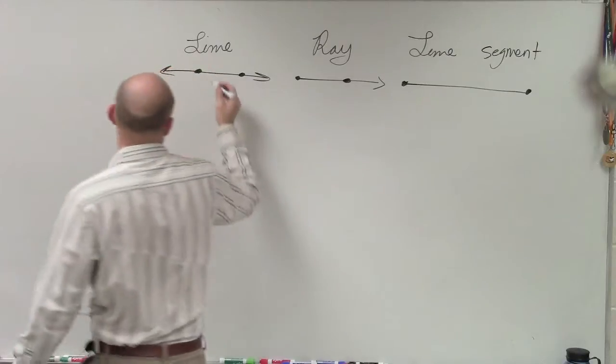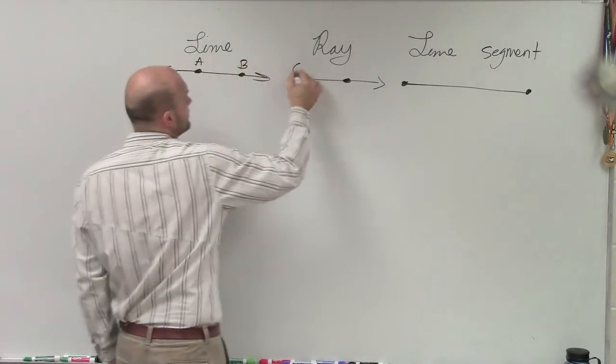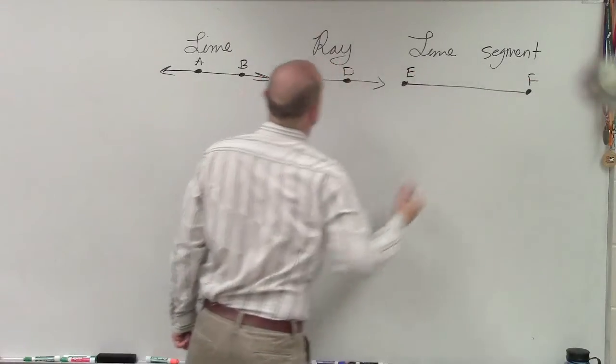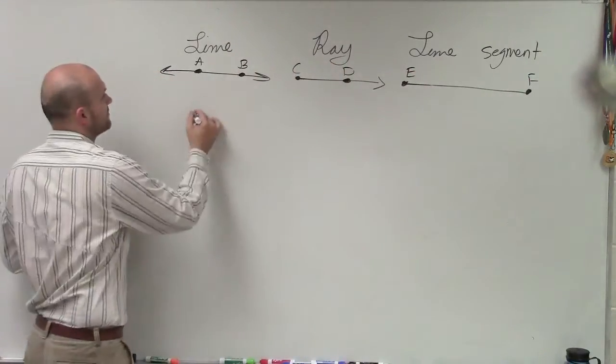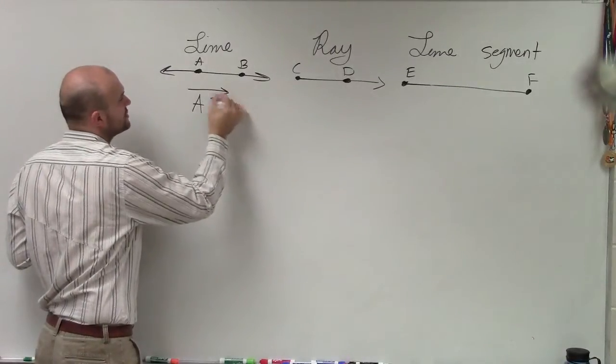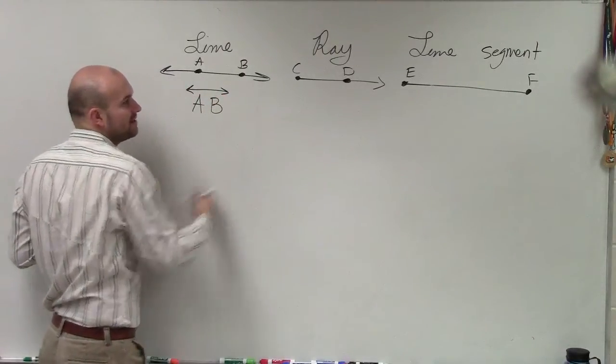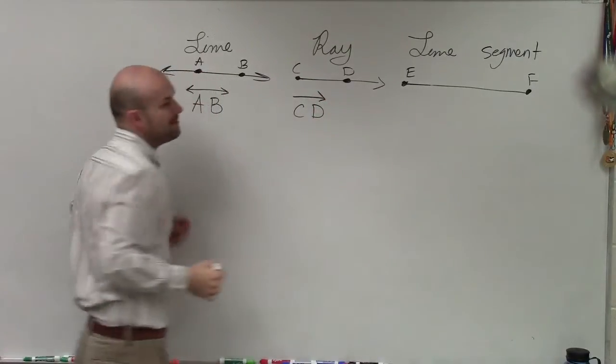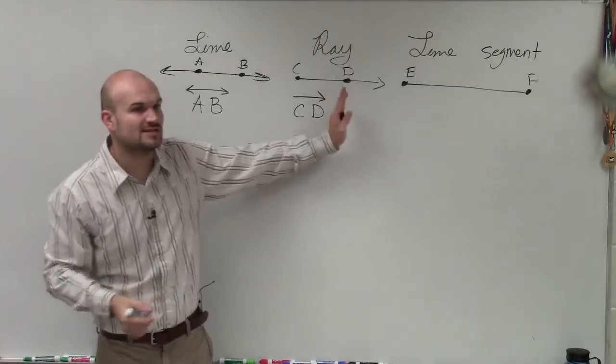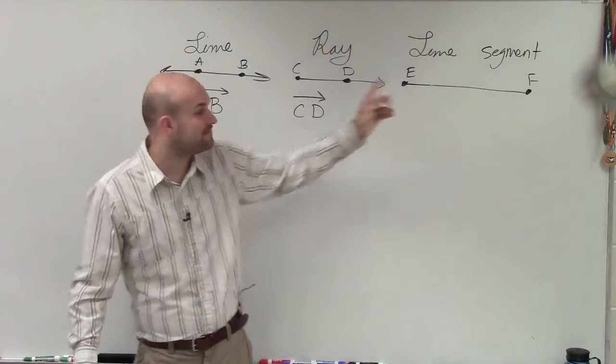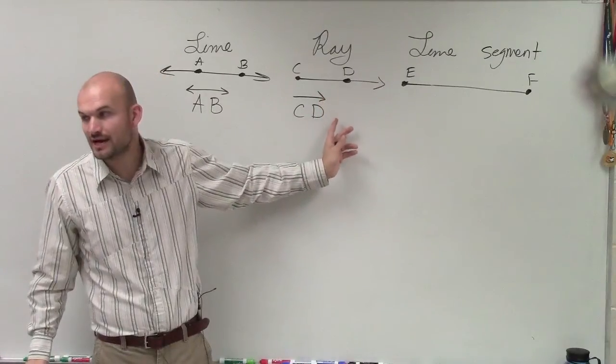So in a line, it doesn't matter. Let's just call this A, B, C, D, E, F. So if I was going to name the line A B, capital letters, and I make sure I draw a line above it. If I'm going to do ray, I do C and D, and I make sure I go in the direction that the ray's going. If it's going from C to D and then it continues on, right? So you write the continuation going on past D.